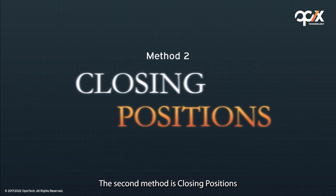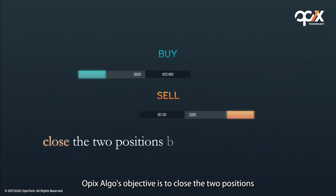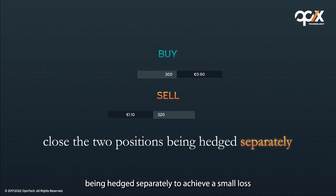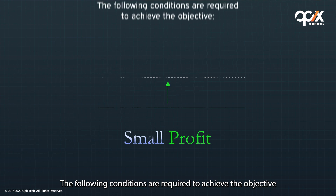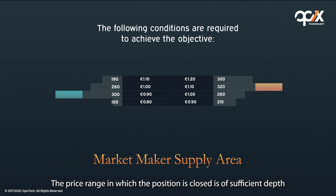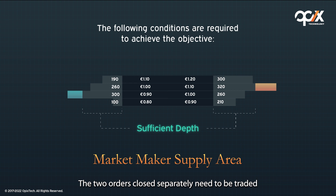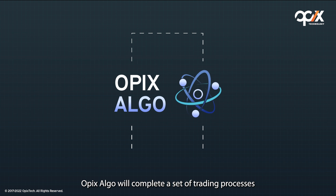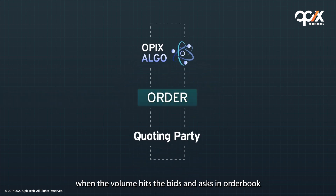The second method is closing positions. OPEX ALGO's objective is to close the two positions being hedged separately to achieve a small loss, a flat, or a small profit. The following conditions are required: the price range in which the position is closed must have sufficient depth in the market maker supply area, and the two orders closed separately need to be traded in the market within a short period of time. OPEX ALGO completes a set of trading processes by quickly matching a handheld order to the quoting party when the volume hits the bids and asks in the order book.